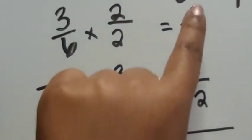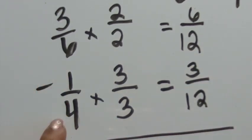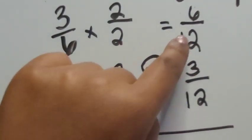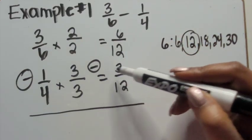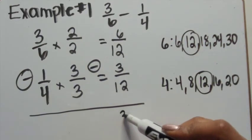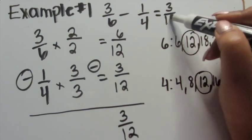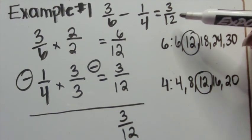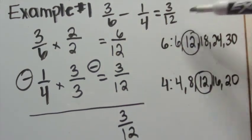So we're going to multiply that numerator by two as well. Three times two equals six. So three-sixths has an equivalent fraction of six-twelfths, and one-fourth has an equivalent fraction of three-twelfths. Now we can subtract because our denominators are alike. Six-twelfths minus three-twelfths equals three-twelfths. That can be simplified, but for this example we're going to leave it as is. So three-sixths minus one-fourth equals three-twelfths.